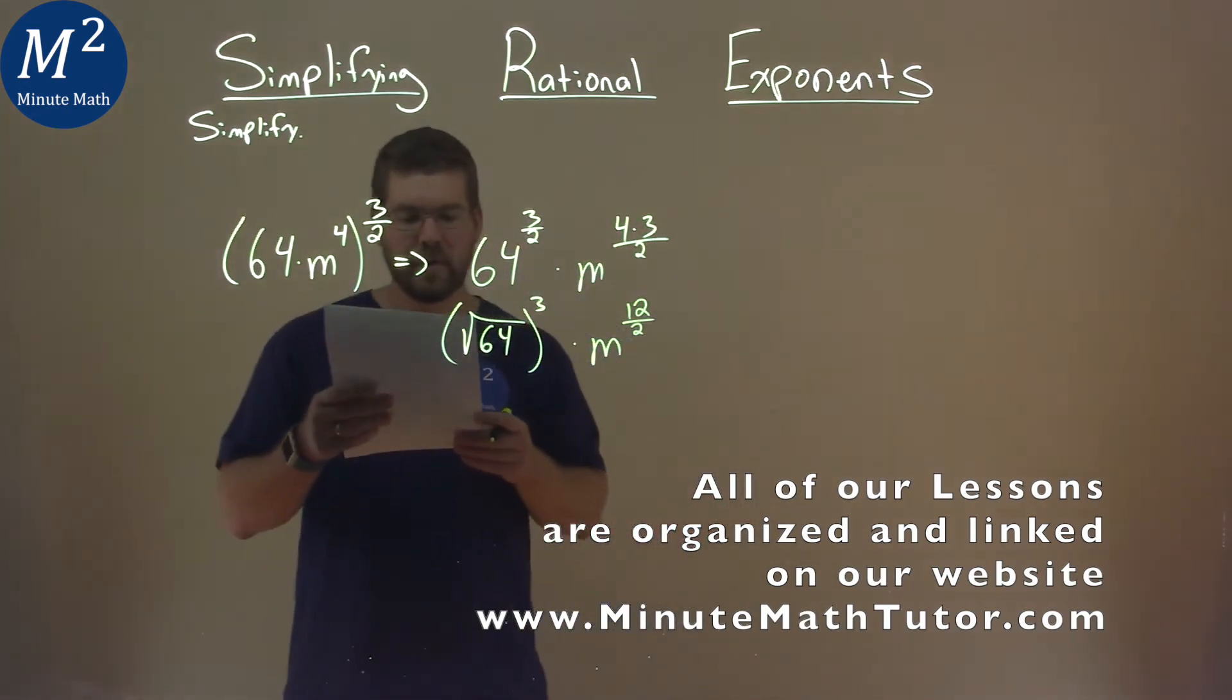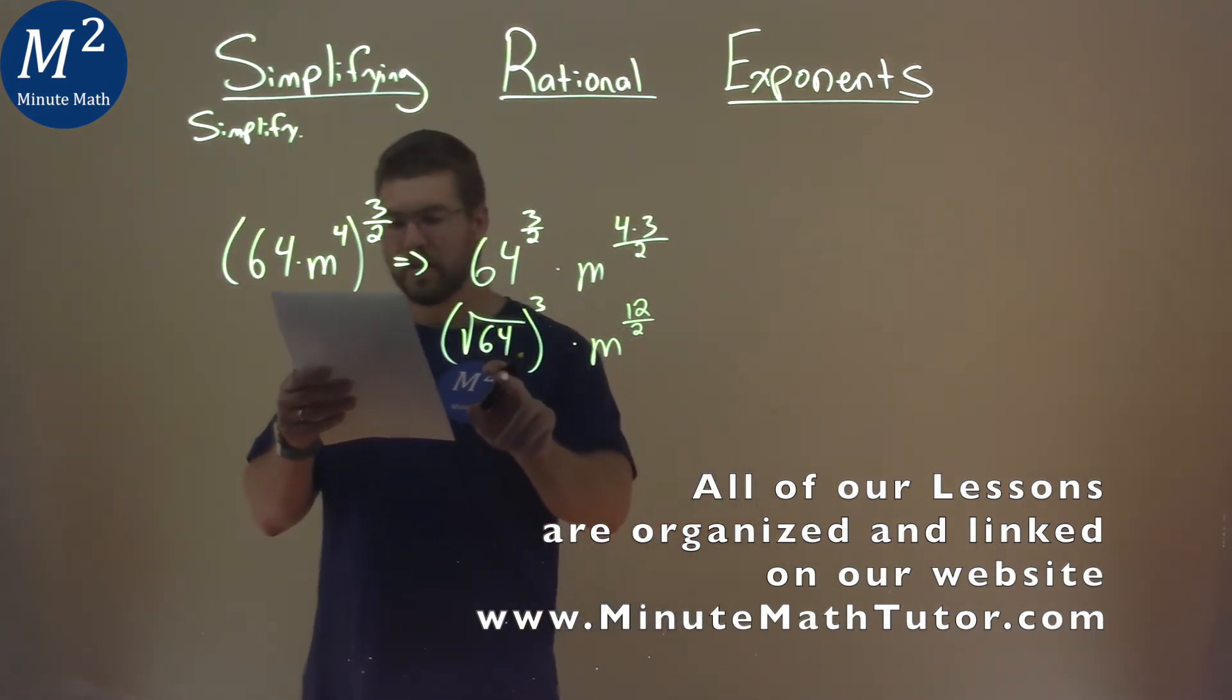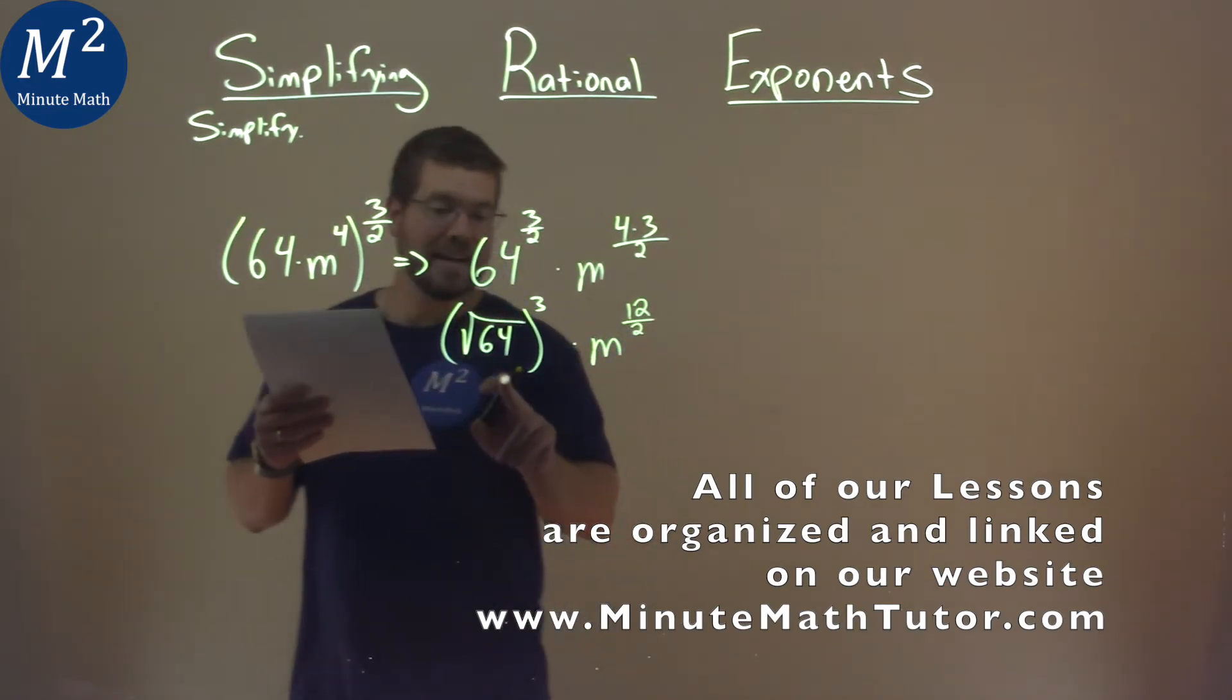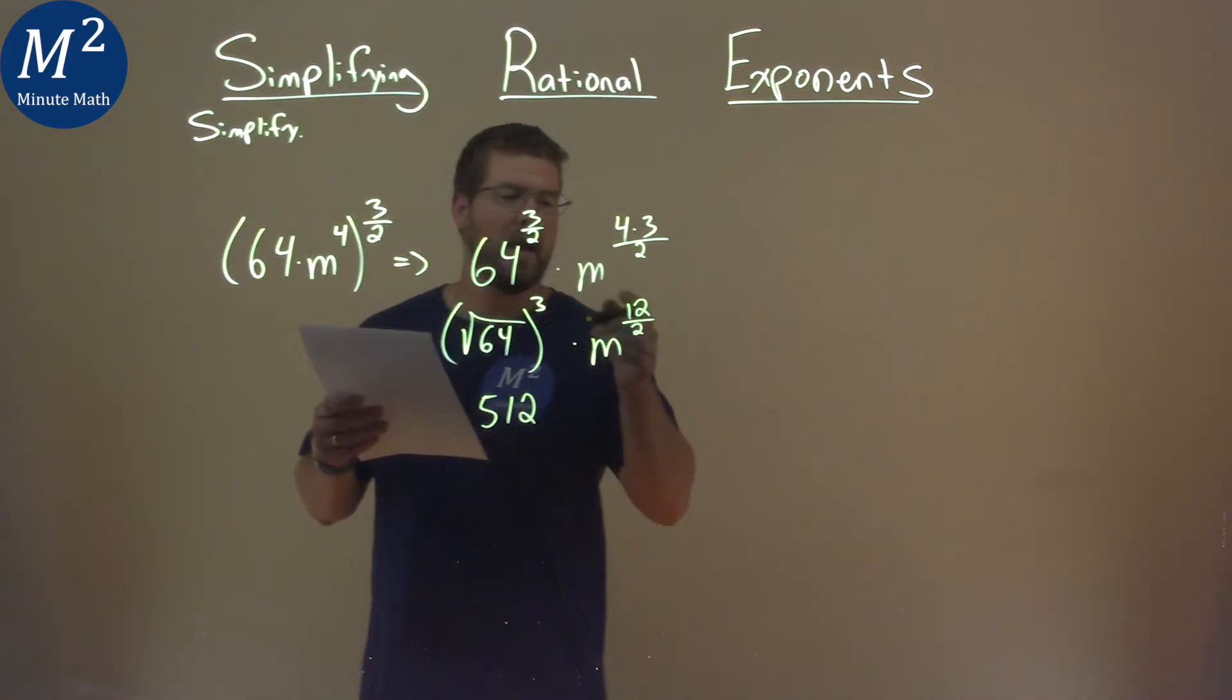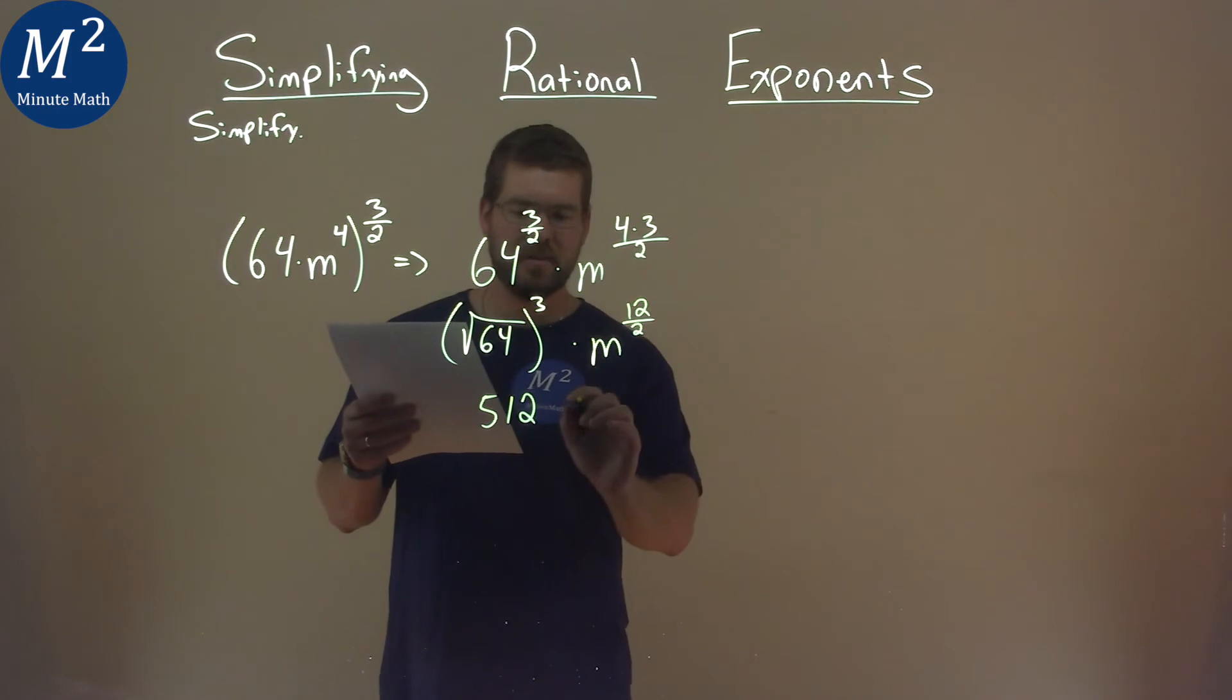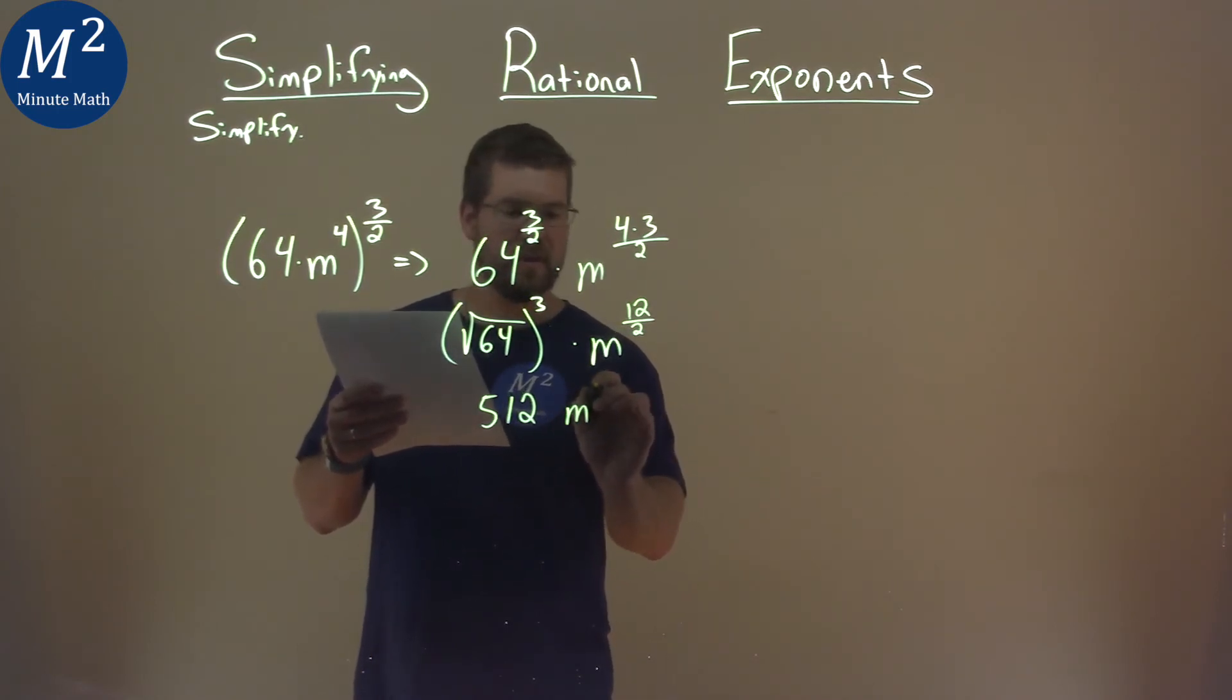Well, the square root of 64, the square root of 64 is 8, and then we put that to the third power, and that comes out to be 512 here. And then 12 divided by 2 is 6, so we have m to the sixth power.